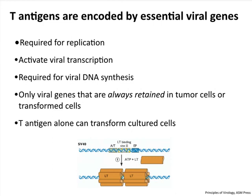These T antigens are needed by the viruses — they are essential viral genes. If you take them out of the genome, the virus does not replicate. They need it for DNA synthesis and for transcription. The genes encoding these T antigens — not just SV40 but adeno and papilloma — are the only ones found in tumor cells and transformed cells. If you take the T antigen gene of SV40 and put it in a cell, you can transform it. If you put cells from inside your cheek in culture and add SV40 T antigen, they become immortalized and you'd have a cell line that grows forever. Any of these T antigens alone is enough to transform cells.